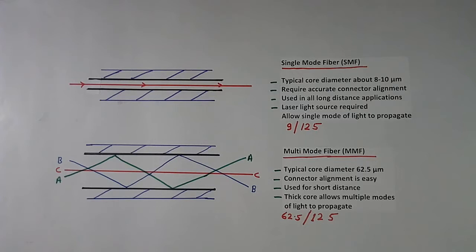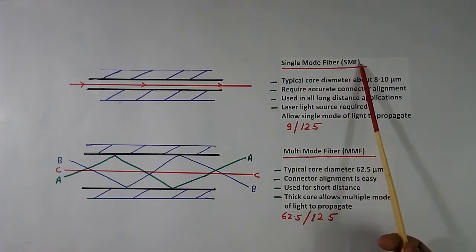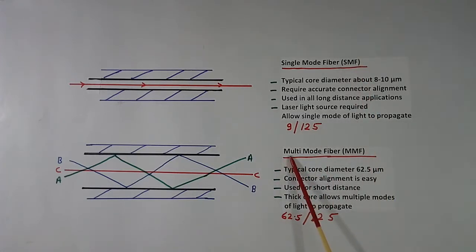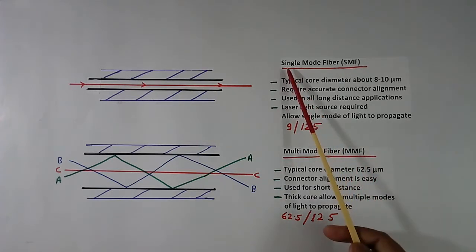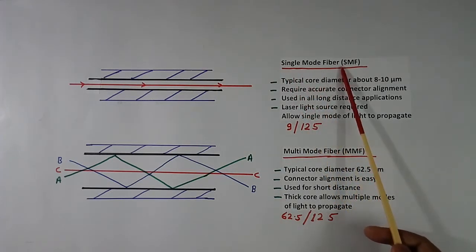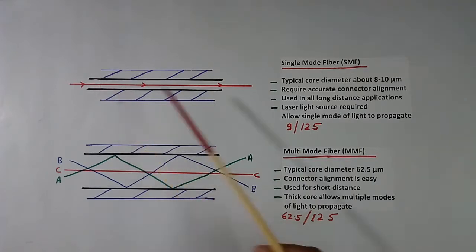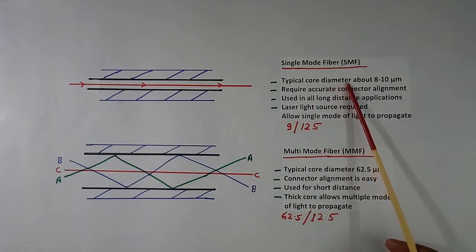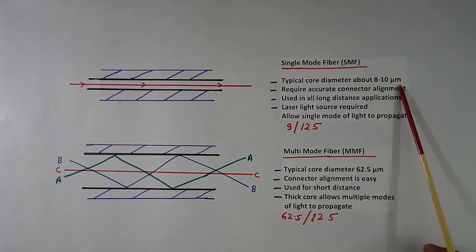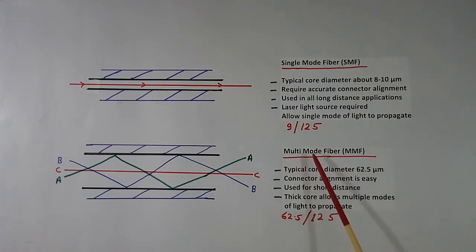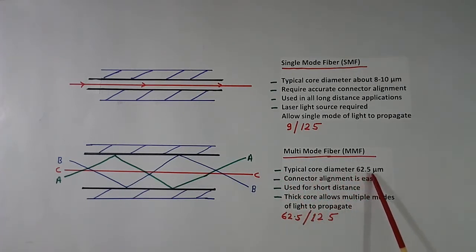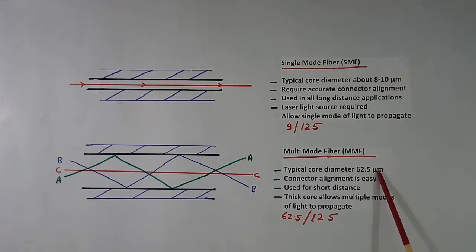Fibre optic cables are available in two modes. One is Single Mode Fiber (SMF), and the second is Multi Mode Fiber (MMF). In single mode fiber, the core is very thin — a typical core diameter is about 8 to 10 micrometers. In multi mode fiber, the typical core diameter is 62.5, but it can be anything from 50 to 100 micrometers.